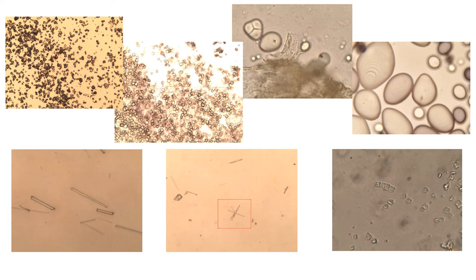Calcium oxalate crystals can appear in various forms: monoclinic or acicular (needle-like) crystals, star-shaped crystals, and tetrahedral or polygonal-shaped crystals. You can determine the diameter of star-shaped crystals and the length of acicular crystals.